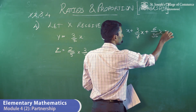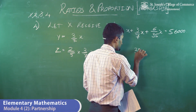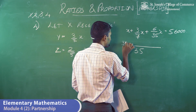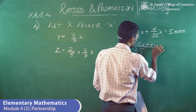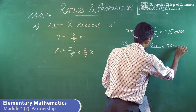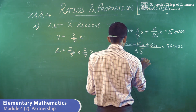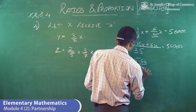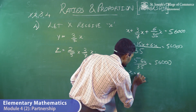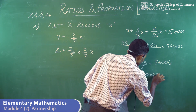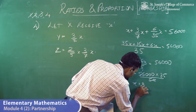The LCM of the denominators is 35. So 35x plus 15x plus 6x equals 56,000 multiplied by 35. That gives 56x equals 56,000 times 35, so x equals 35,000.